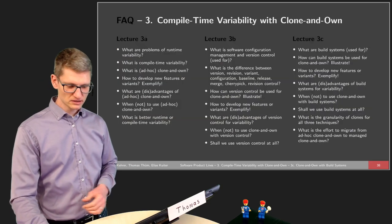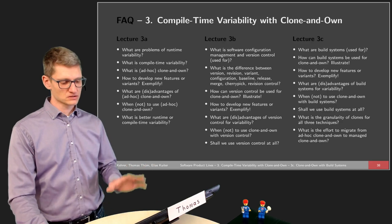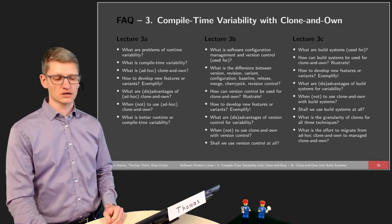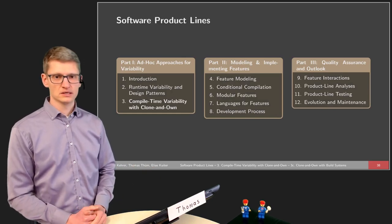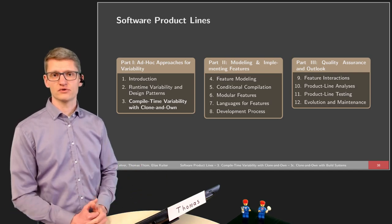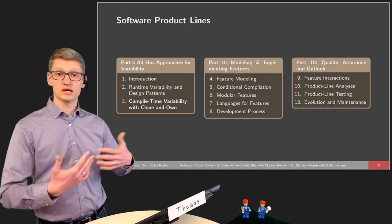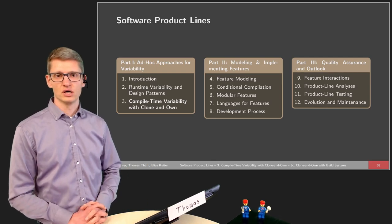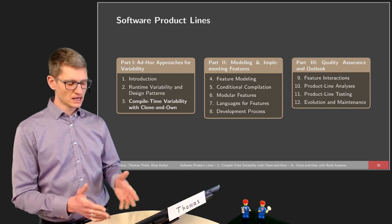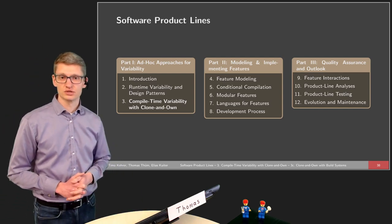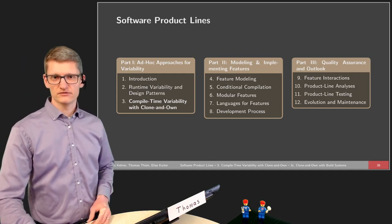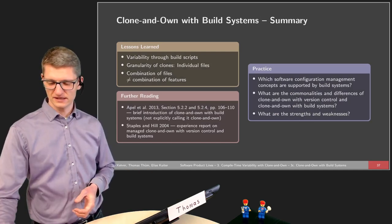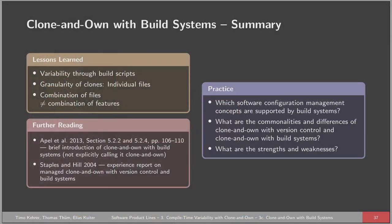It was nice to have you here. As in every lecture, we have a couple of questions — the idea is not that you can fully answer them immediately; we also have exercises that go into more detail. In the next lecture, we will start talking about approaches that are not considered ad hoc approaches for variability. We want to start modeling and implementing features. In lecture four, we will see how to model features, which features exist, and what are valid combinations. Build systems will appear again in lecture five for conditional compilation and other product line implementation techniques. See you in a later video!